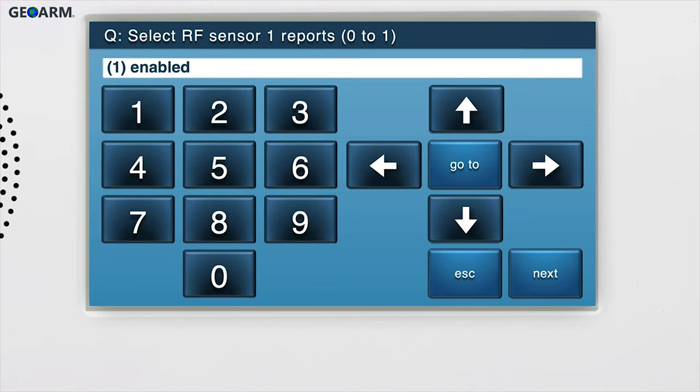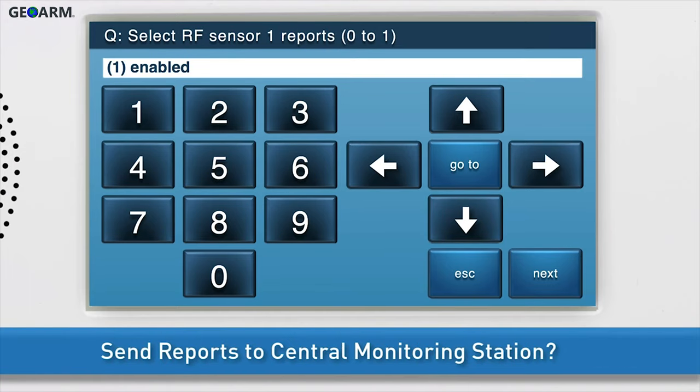Next, choose whether or not to send reports to the central monitoring station. If you would like reports related to the smoke detection feature to be sent to the central station, select 1 enabled. Press the down arrow to go to the next sub-question.